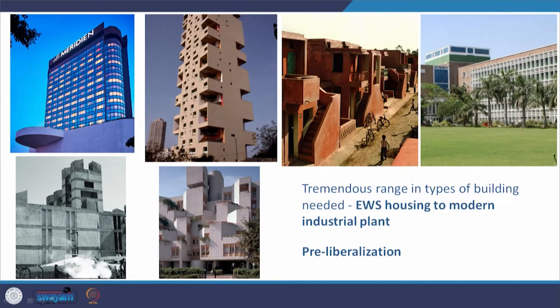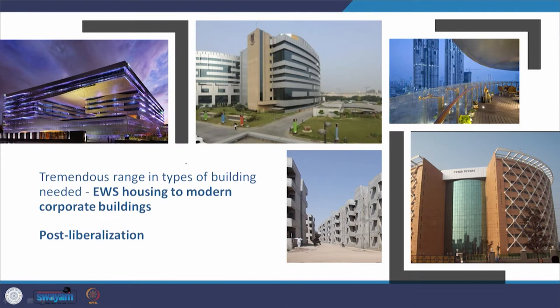There is also a tremendous range in the types of buildings needed. In the pre-liberalization period a vast range was required — from Aranya low-cost housing, to hospitals like AIIMS, to apartment buildings like Kanchanjunga, to modern five-star hotels like the Meridian in Delhi, to industrial plants like the Dutsagar Dairy and the NDDB corporate office by Kanvinde. The same tremendous range continues post-liberalization. So many variations have to be factored in.